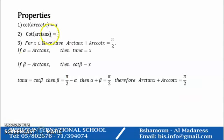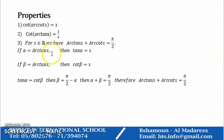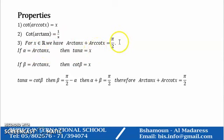Properties: cotangent of arc cotangent(x) equals x; cotangent of arc tangent(x) equals 1/x. For x belonging to ℝ, we have arc tangent(x) plus arc cotangent(x) equals π/2.